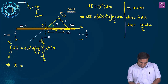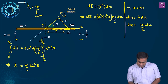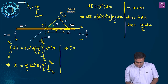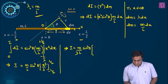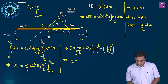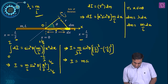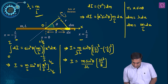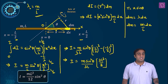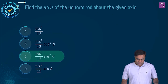We get on the left hand side I, on the right hand side m by L into sin²θ into x³ by 3, between the limits L by 2 and minus L by 2. Substituting the limits, we get I equal to m by L sin²θ, divided by 3, and in the bracket we have (L/2)³ minus (−L/2)³. Upon simplification this turns out to be M sin²θ by 3L times 2 times L³ by 8. Simplifying further, the final answer is ml² by 12 sin²θ. The correct option for this question is C.